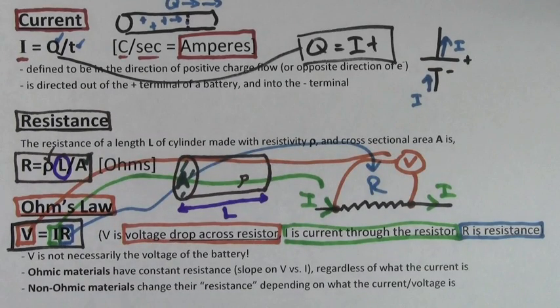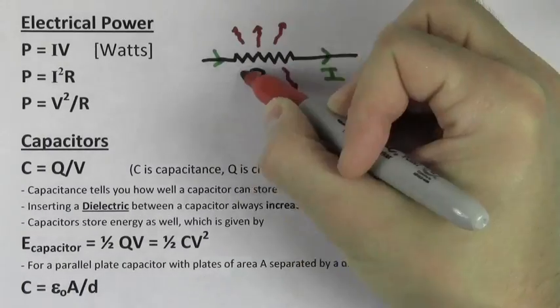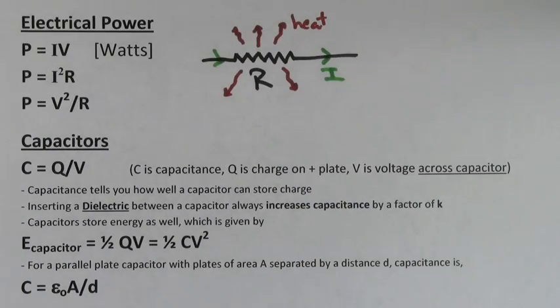Careful — V here is not necessarily the voltage of the battery. When current runs through a resistor, it gives off heat.